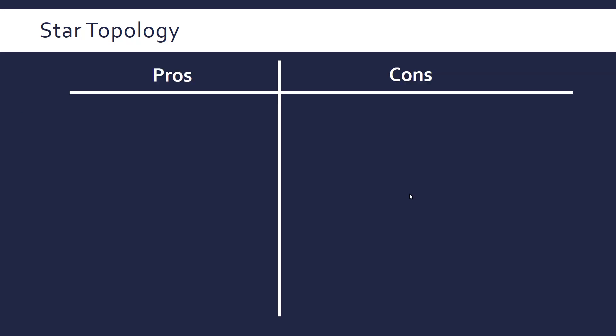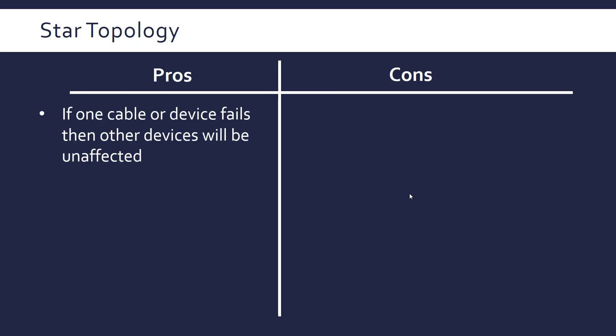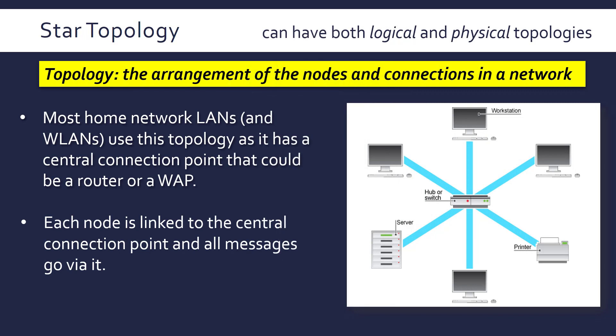Exam questions are often framed in the context of evaluating a topology — what's good about it, what's bad about it. One of the main plus points is that if one cable or one device fails, the other devices will be unaffected. If this workstation at the top failed, or the cable from it to the central point failed, this node would be affected, but the other nodes would still be able to communicate with each other without being affected by the downtime of another node.